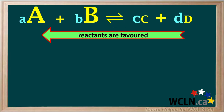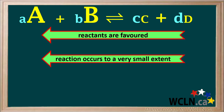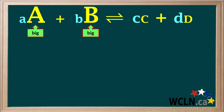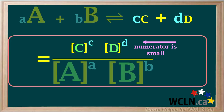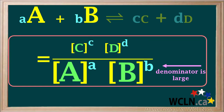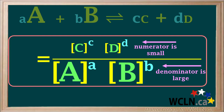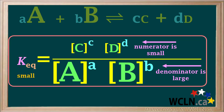Now we'll look at an equilibrium equation in which the reactants are highly favored and the reaction occurs to a very small extent. The reactants have high concentrations, represented by big letters, and the products have low concentrations, represented by smaller letters. In the KEQ expression, the numerator is small and the denominator is large, so the value of KEQ is small.